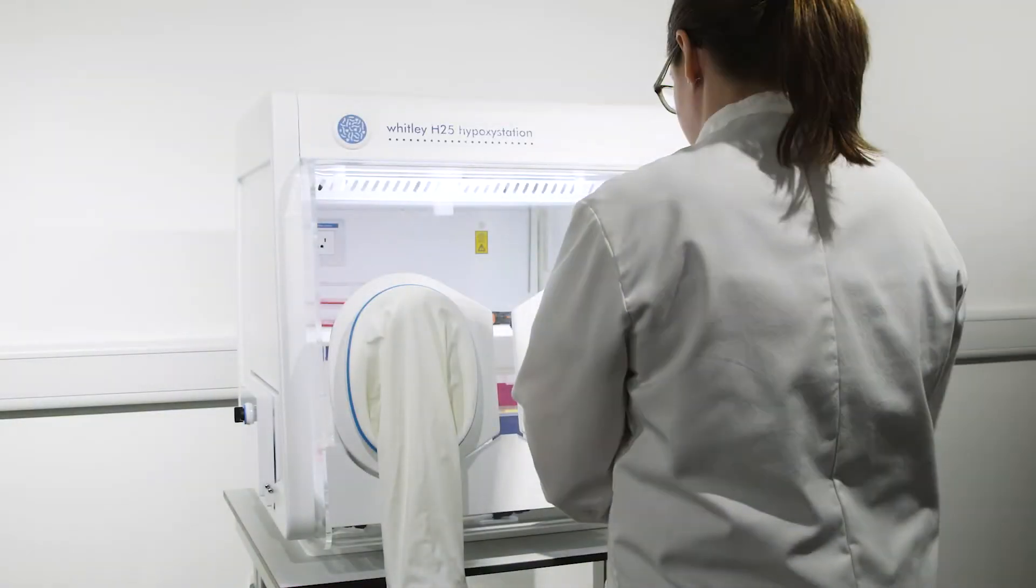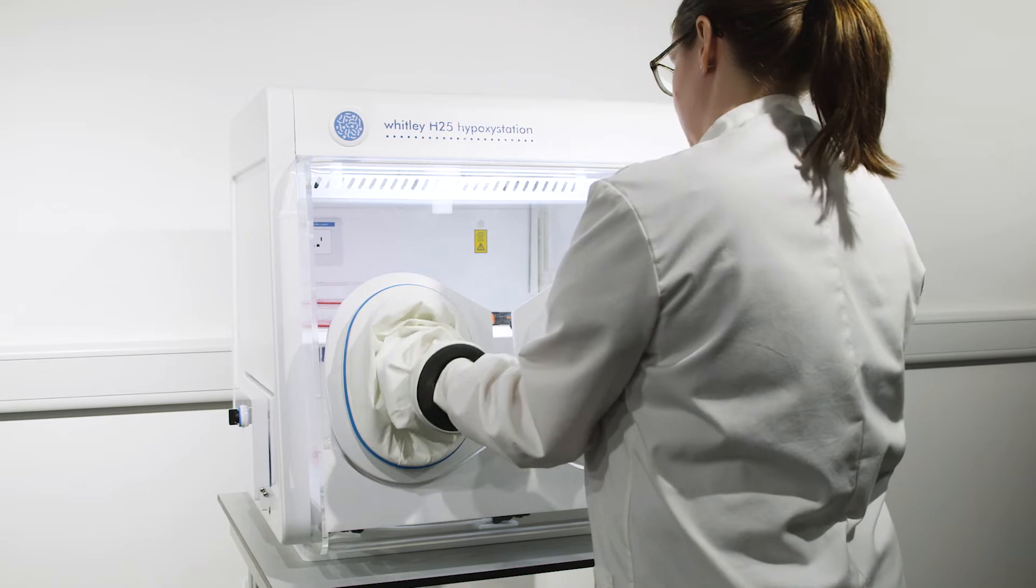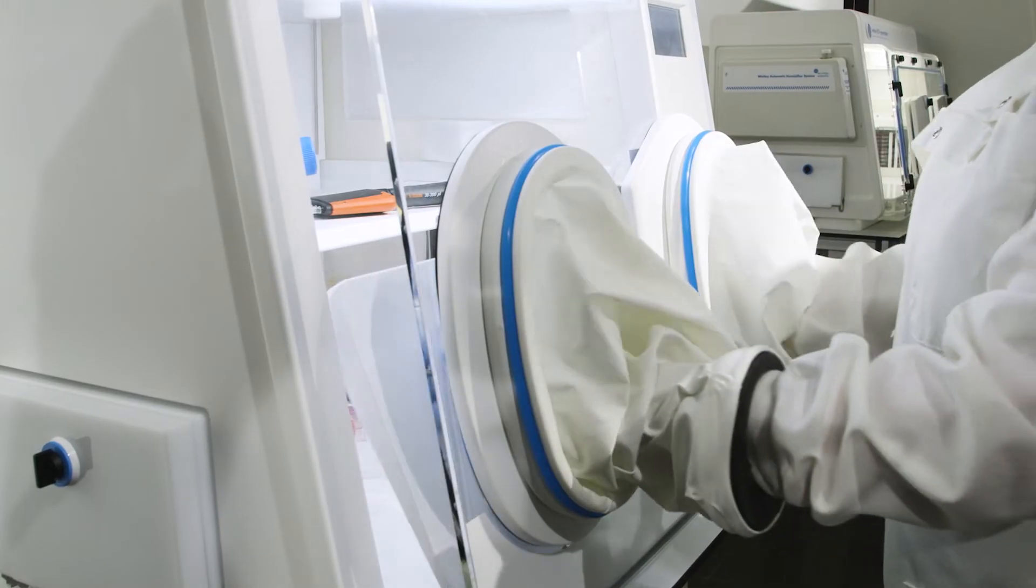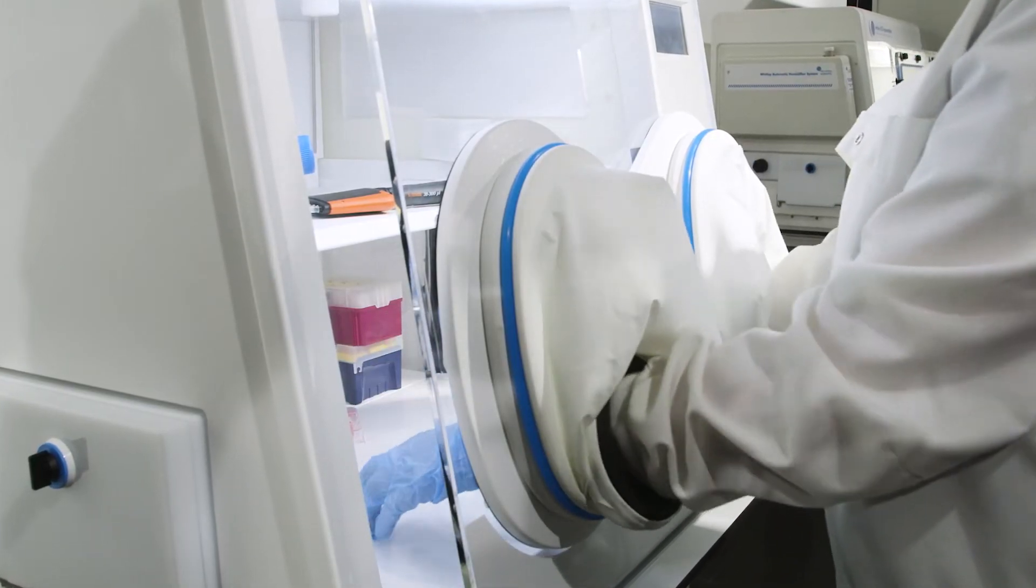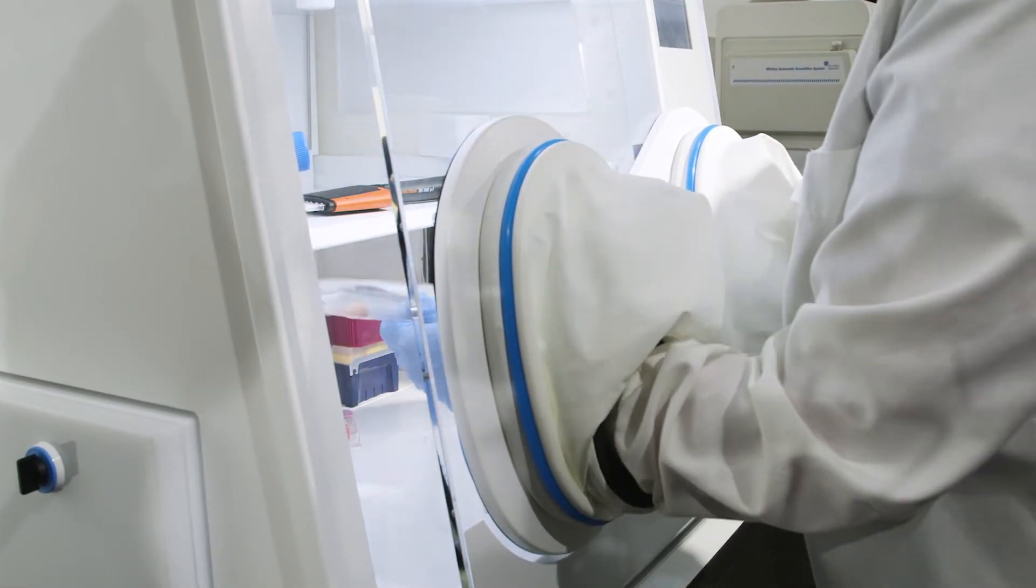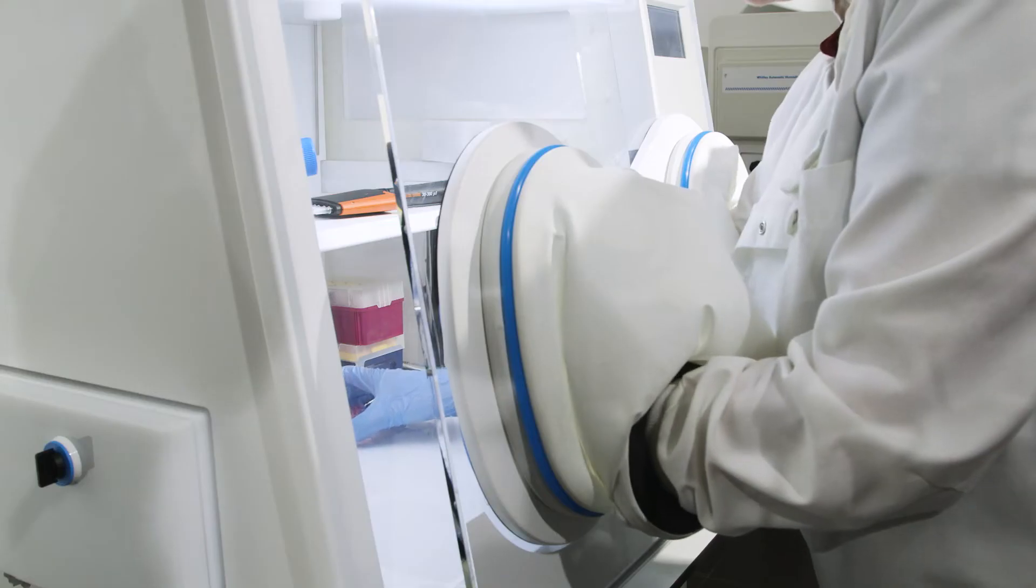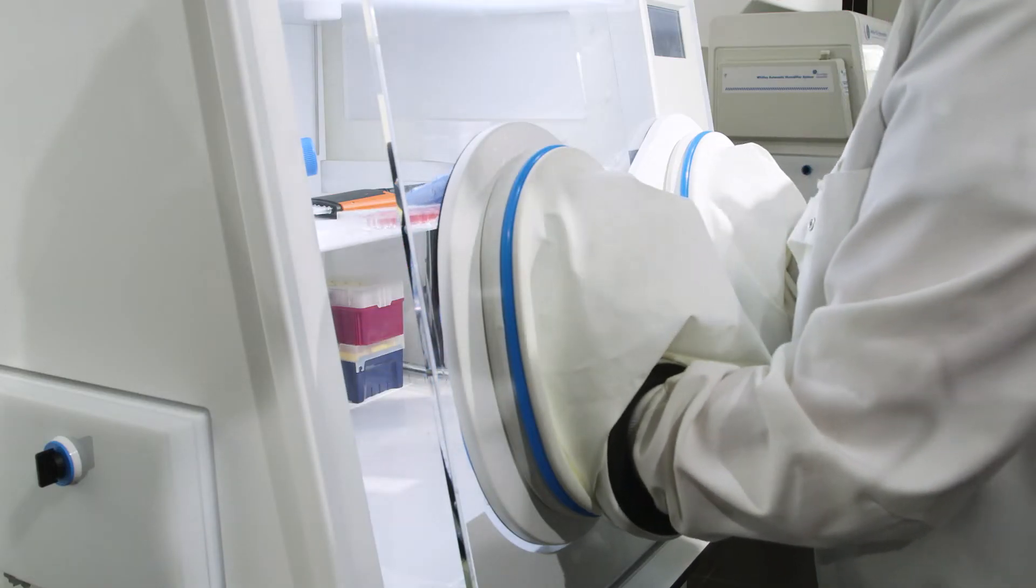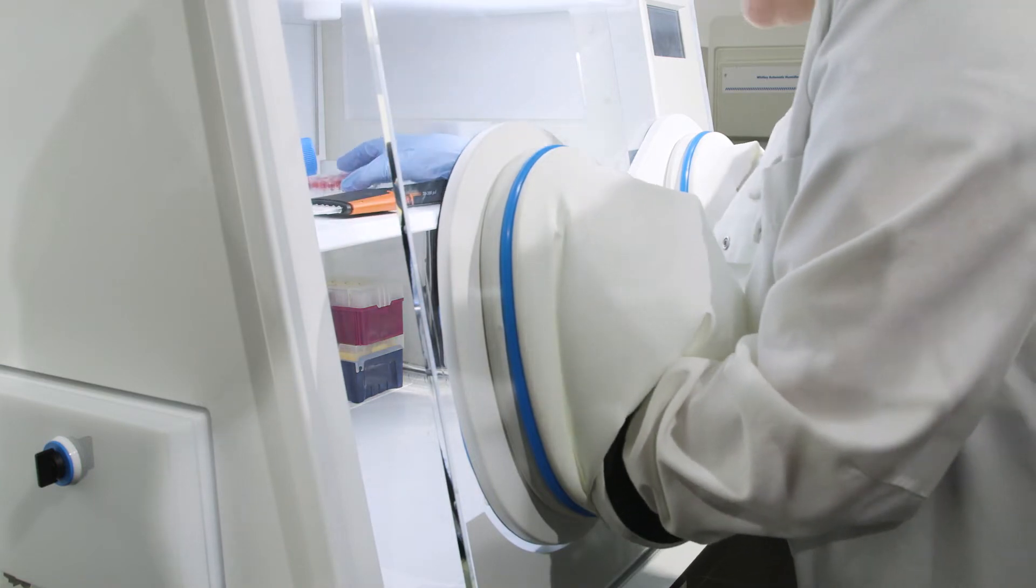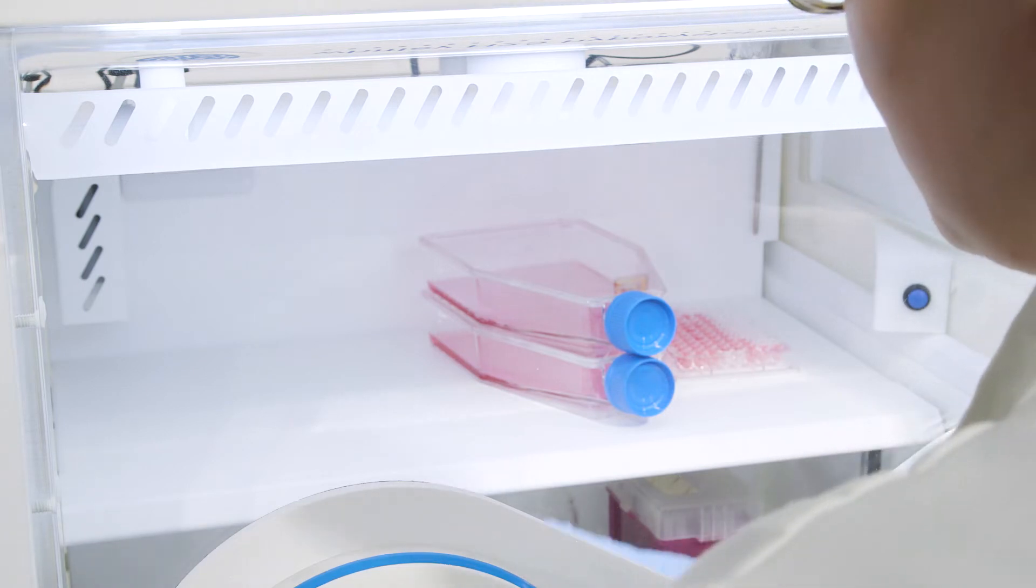The H25 is the most compact hypoxie station in our range. It allows you to accurately control oxygen in 0.1% increments up to 20%, carbon dioxide in 0.1% increments up to 15%, and relative humidity up to 80%. This flexible workstation can also be used anoxidly if required.